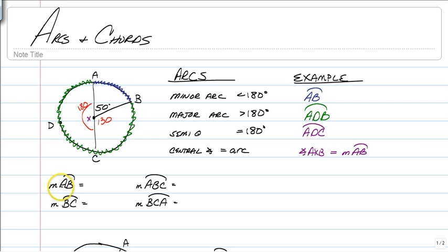So we know that the measure of AB, AB is this arc. So we're going to have 50 degrees. BC is 130 degrees. ABC, so starting at A, passing B, and ending at C, we can see that that's half a circle. So that's 180 degrees.